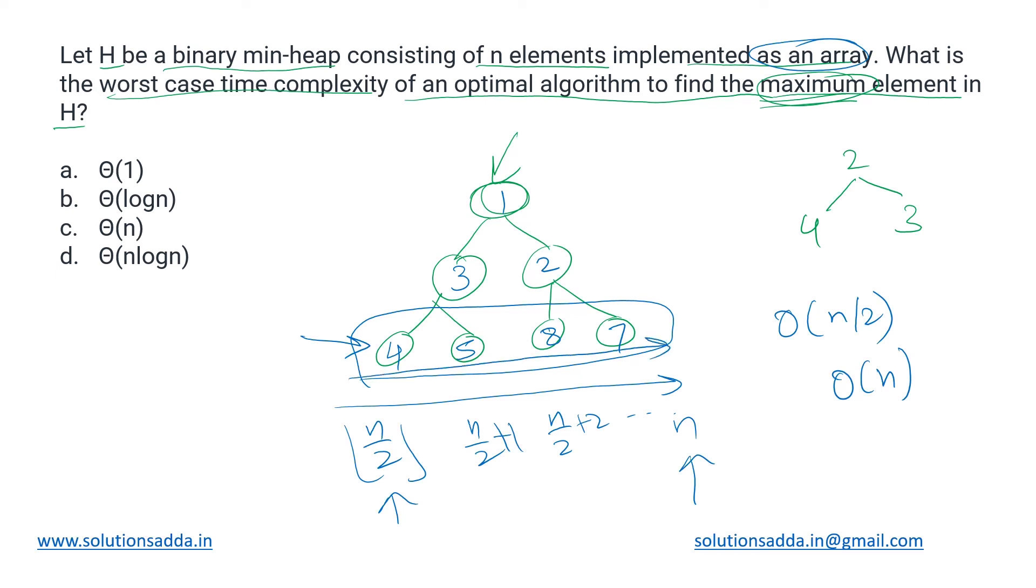So we actually need to perform a linear search on half of the array. We cannot perform binary search because these elements are not in the sorted order. So what we will do is, this is our array. This is an n by two with index, this is the nth index. So from this part to this part we will be performing a linear search, and that is how we will be finding out the maximum element.